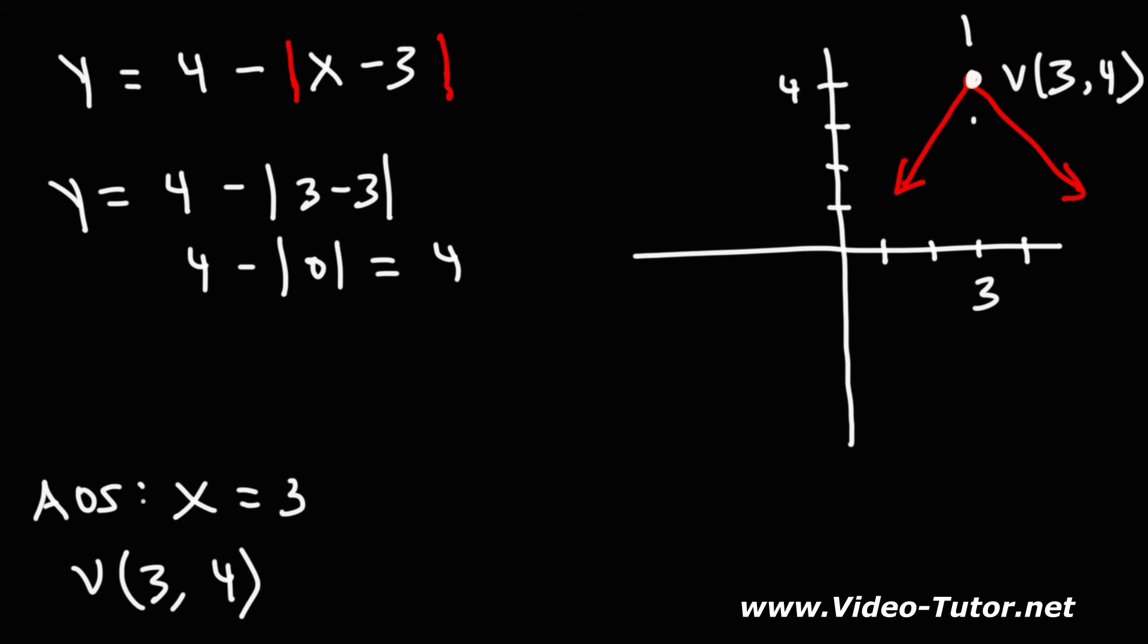And the axis of symmetry is the line x equals 3. So that's how you can find the vertex and the axis of symmetry for an absolute value function. Now, let's try a different example.